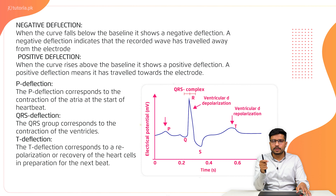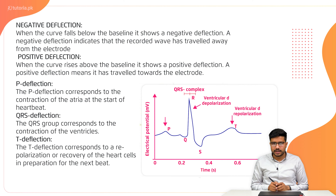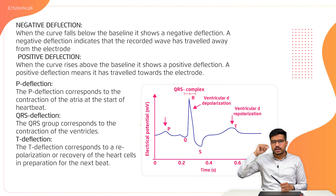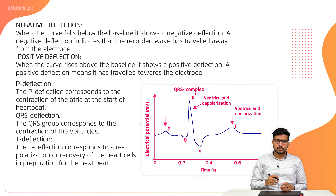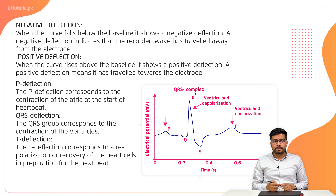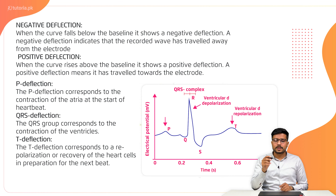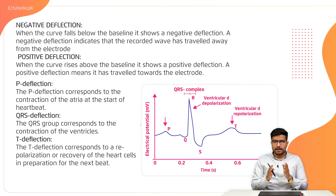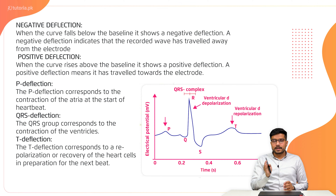There is a graph showing the QRS and T deflection. The T-deflection corresponds to the repolarization or recovery of the heart cell in preparation for the next beat. The heart can replicate its own activity in the next beat, starting from the previous beat. The T-deflection shows the recovery phase.